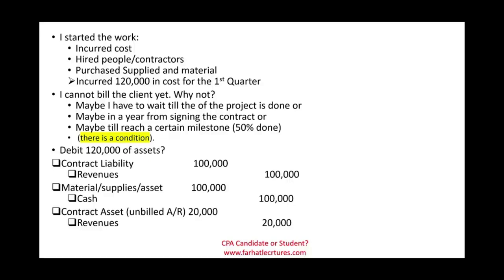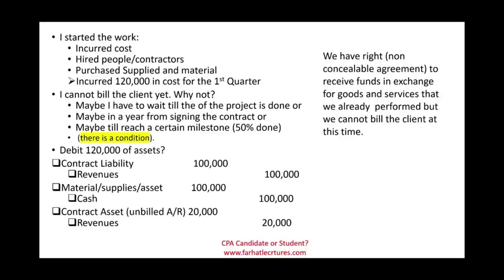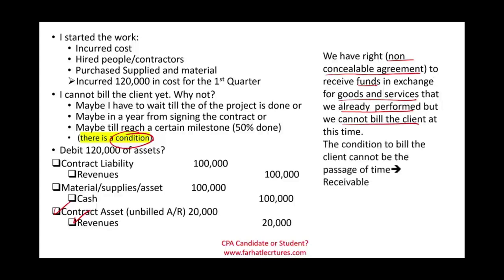So what is a contract asset? Simply put, we have the right — through a non-cancelable agreement — to receive funds in exchange for goods and services. We already performed the work, but for some condition we cannot bill the client at this time. On our books we record a contract asset and recognize the revenue, but it is not an accounts receivable. Bear in mind: if the condition to bill the client has to do with the passage of time — meaning as time goes by you can bill them — then it would be a receivable. Keep that in mind for multiple choice questions.